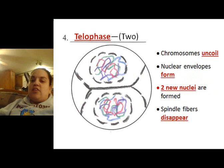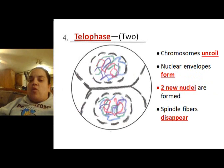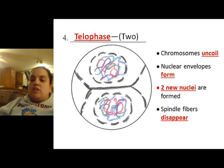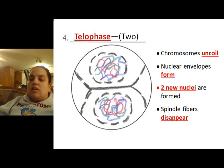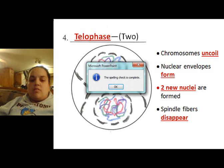Telophase. You should already have the diagram drawn. On one side write telophase, and then: chromosomes uncoil — that's an important word, uncoil — nuclear envelope forms, two new nuclei are formed, spindle fibers disappear.